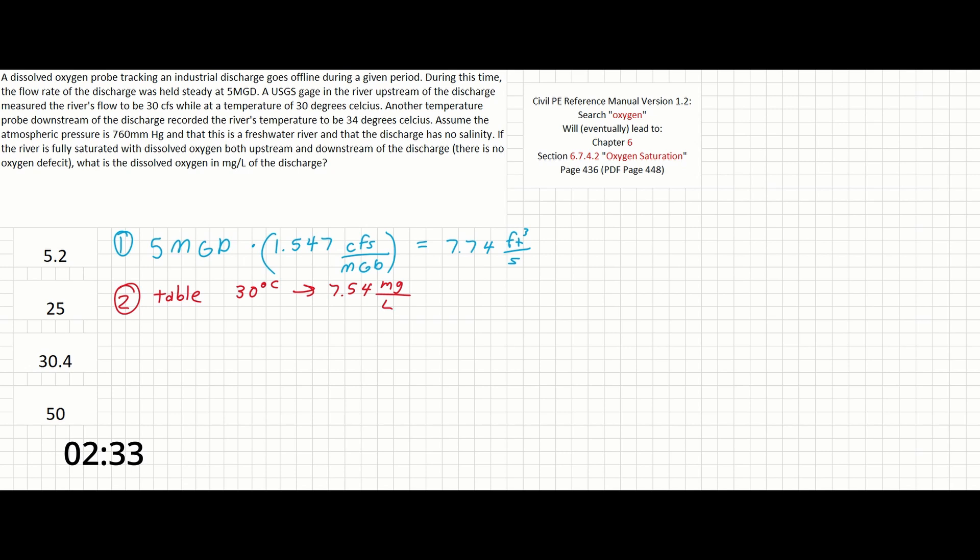Additionally, the problem tells us that the probe downstream of the discharge records the river's temperature to be 34 degrees Celsius. The corresponding DO concentration for this temperature is 7.05 mg per liter.